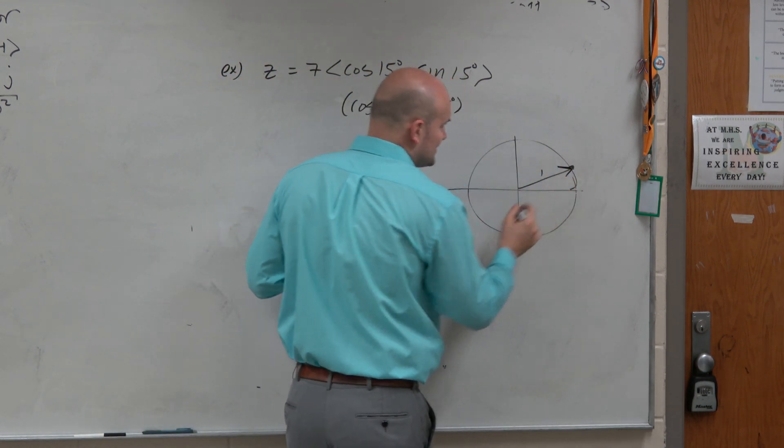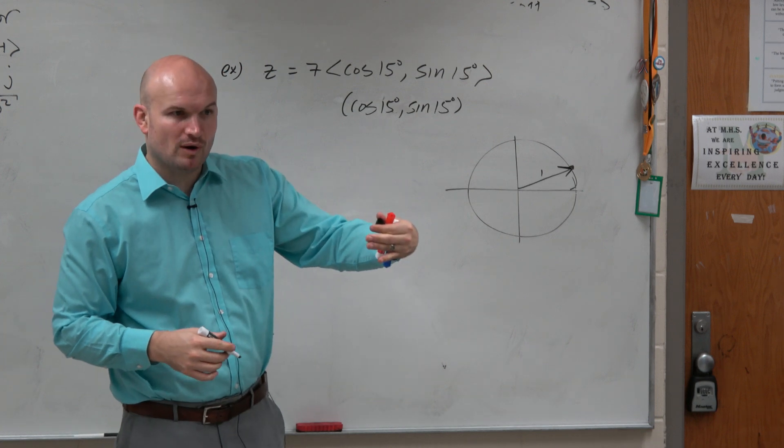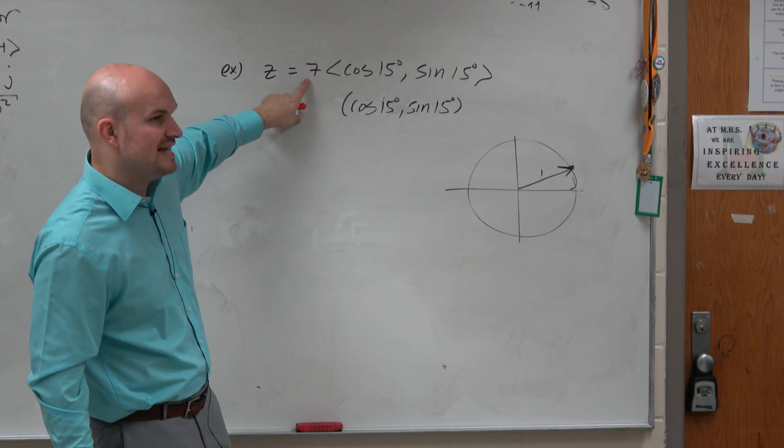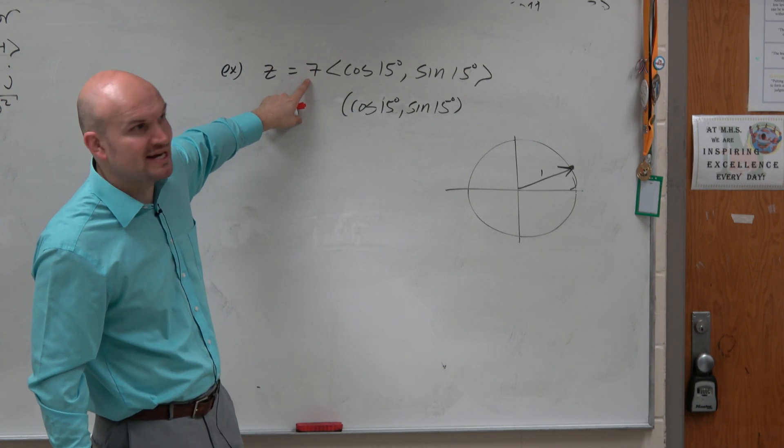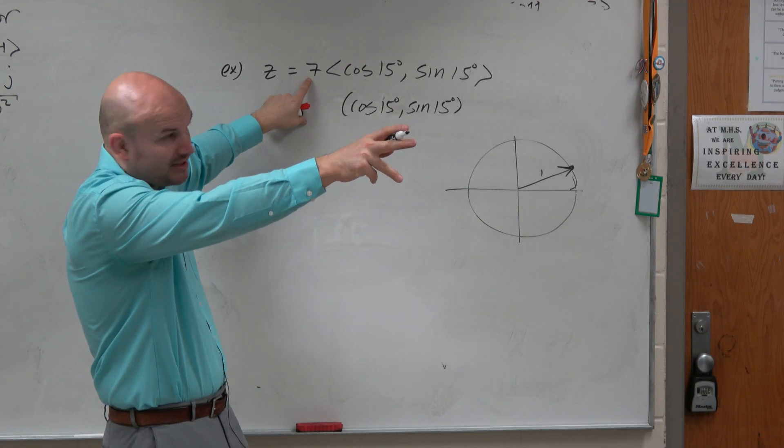So if we were looking at this as a vector, we know that its magnitude is 1. However, when we have a scalar of 7, we're multiplying it by its magnitude. If you guys look at that formula,